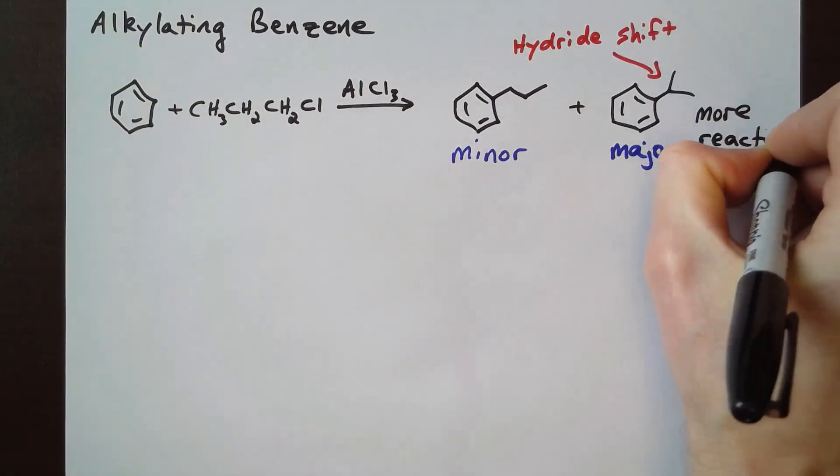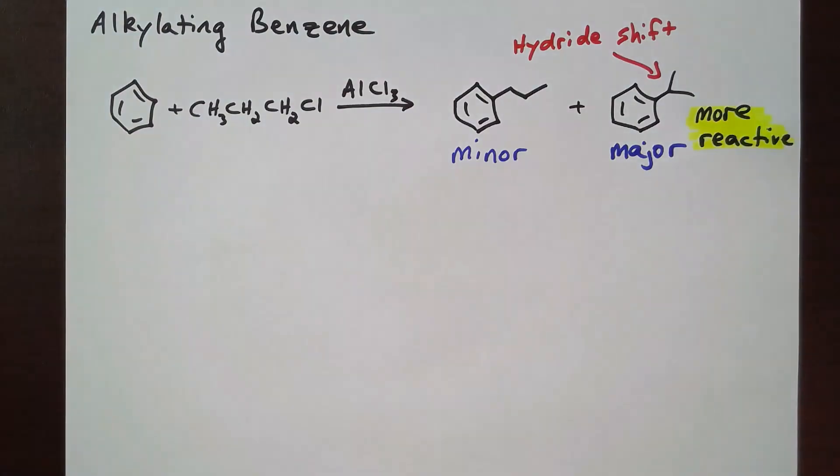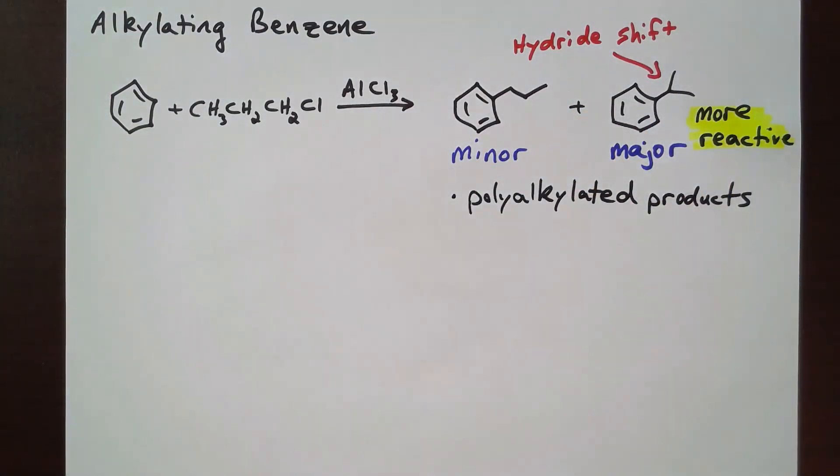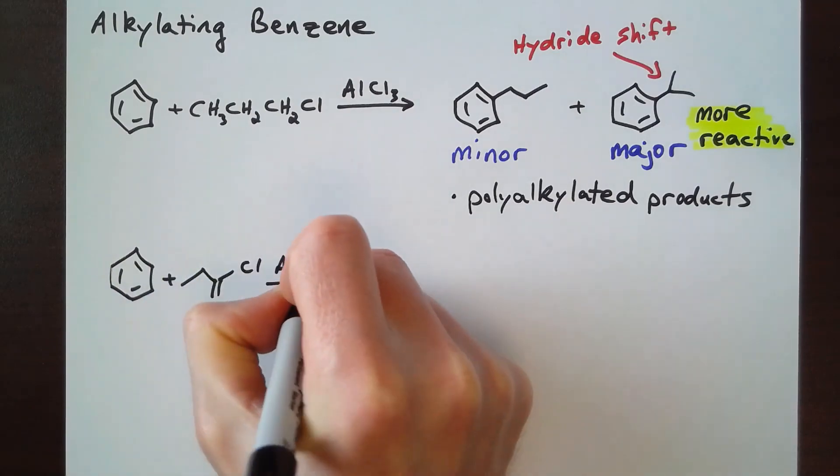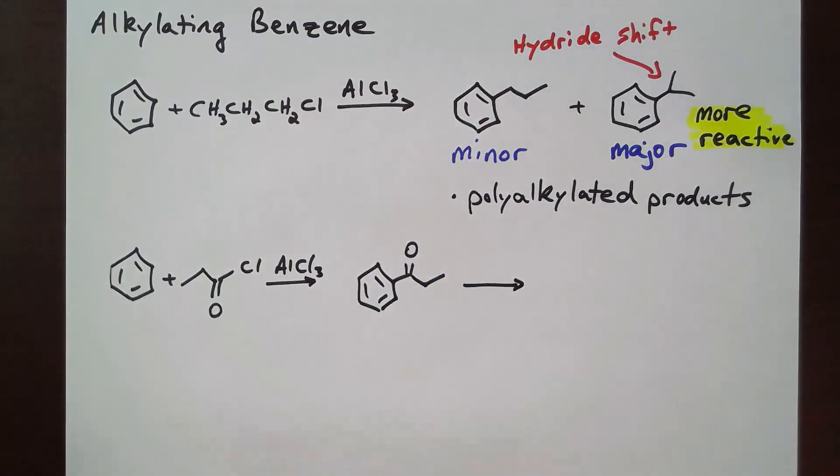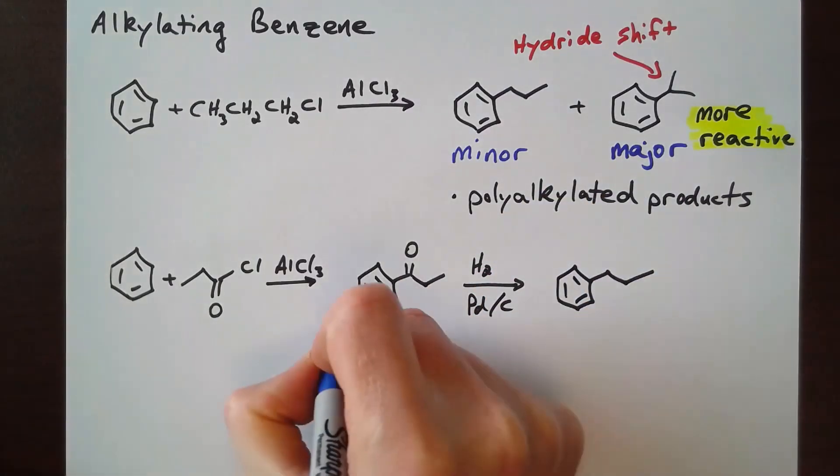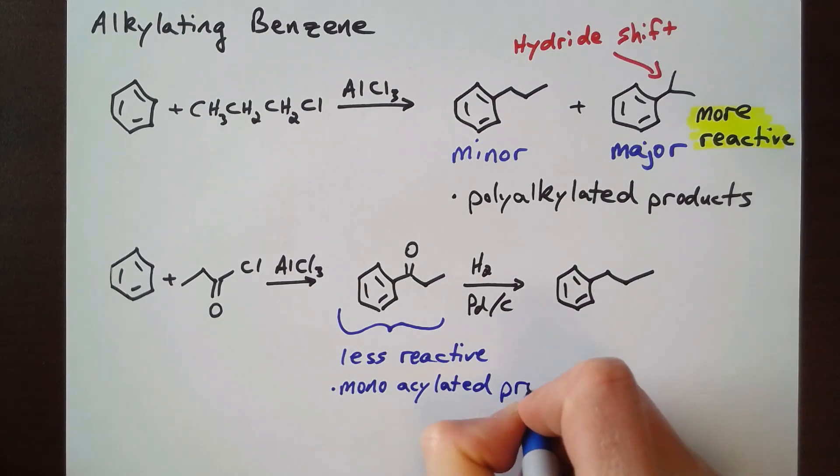In addition, alkyl-substituted benzene is more reactive than benzene, so polyalkylated products can result if there is not a large excess of benzene present. Friedel-Crafts acylation, on the other hand, makes only one product that is less reactive than benzene, so only a mono-acylated product would result. If this substitution is then followed by reduction, we can get the desired product.